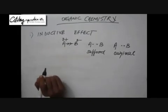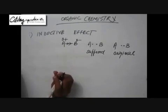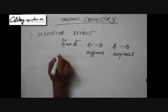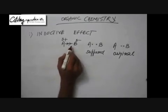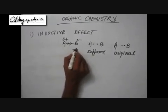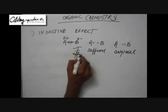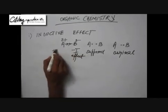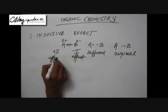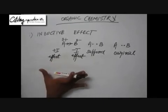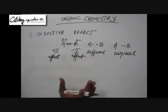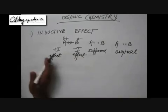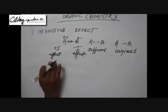Now, to identify whether an atom will have a minus I effect or a plus I effect: the atom which is pulling up the electrons is said to have minus I effect, and the atom which is giving up its electrons is said to have plus I effect. Evidently, the atom which is more electronegative will have minus I effect, and the atom which is less electronegative will have plus I effect.